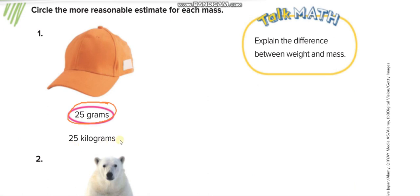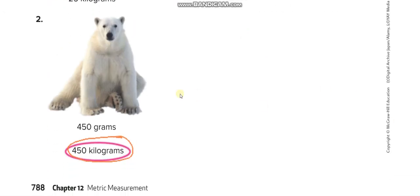This bear, 450 grams or 450 kilograms? 450 grams means even less than one kilo, one kilogram, because one kilogram is equal to 1,000 grams. So 450 grams is even less than half kilo, half kilogram, because half kilogram is 500 grams. Because one kilogram is 1,000 grams, so half kilogram is 500 grams. So 450 kilograms.